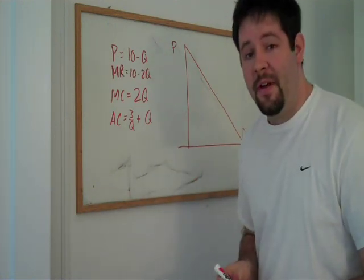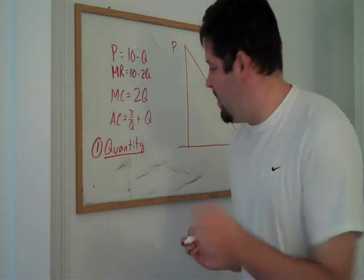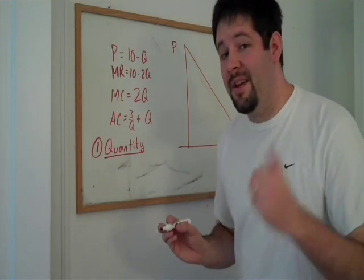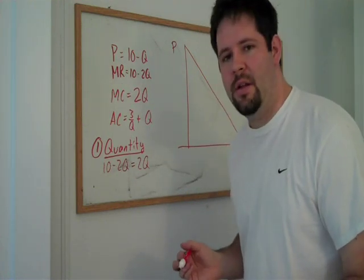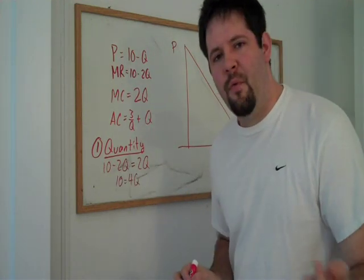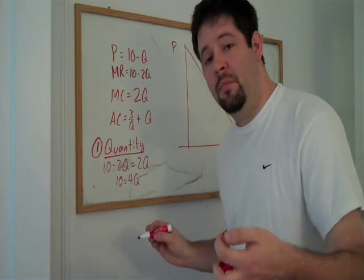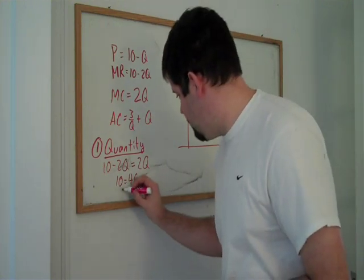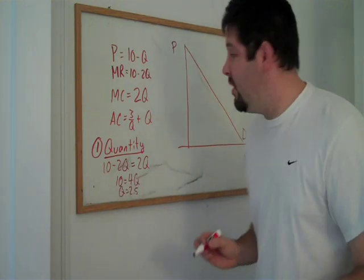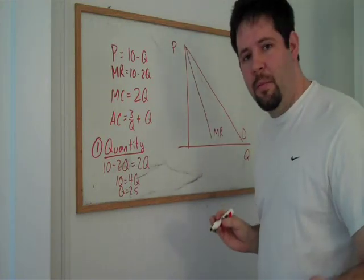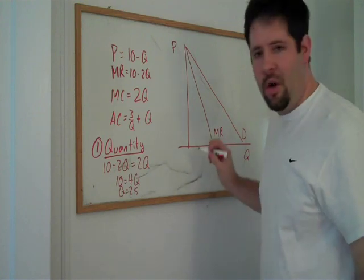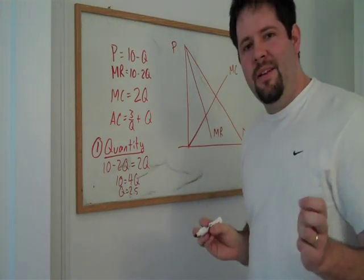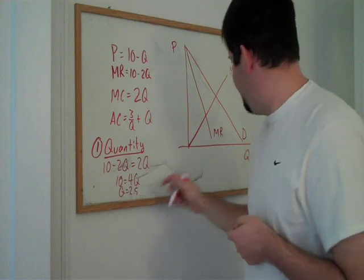The first step is to find the quantity. As we said before, the equamarginal principle tells us to set marginal revenue equal to marginal cost. If marginal revenue equals marginal cost, we can go ahead and solve for quantity. So 4Q equals 10, Q equals 2.5. Now graphically, how does this look? Well, there's our marginal revenue curve, same intercept, twice the slope. Our marginal cost here is just a straight line, and they intersect at a quantity of 2.5.